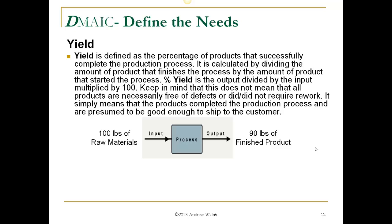Yield is defined as the percentage of products that successfully complete the production process. It's calculated by dividing the amount of product that finishes the process by the amount that started, multiplied by 100. Keep in mind this does not mean all products are free of defects or did not require rework — it simply means the products completed the process and are presumed good enough to ship. For example, 100 pounds of raw materials going in and 90 pounds of finished product out gives a yield of 90%.